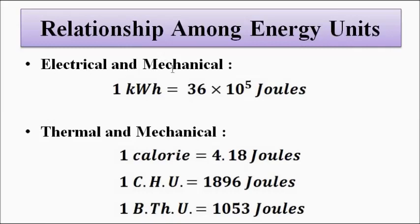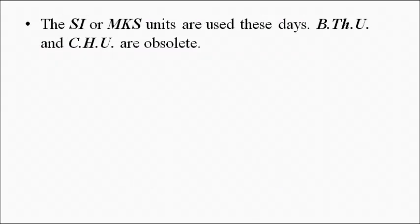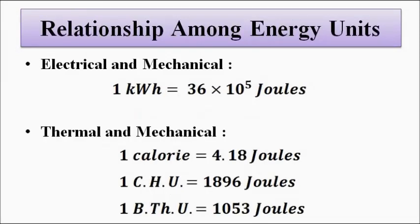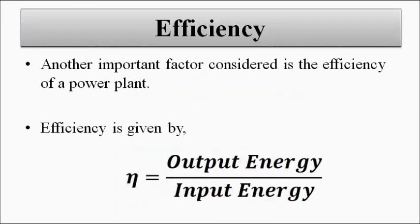The relationships among energy units are: electrically and mechanically, one kilowatt-hour equals 36×10⁵ joules. For thermal and mechanical, one calorie equals approximately 4.18 joules, one Centigrade Heat Unit equals 1896 joules, and one British Thermal Unit equals 1053 joules. SI and MKS units are used today; British Thermal Units and Centigrade Heat Units are no longer in use.